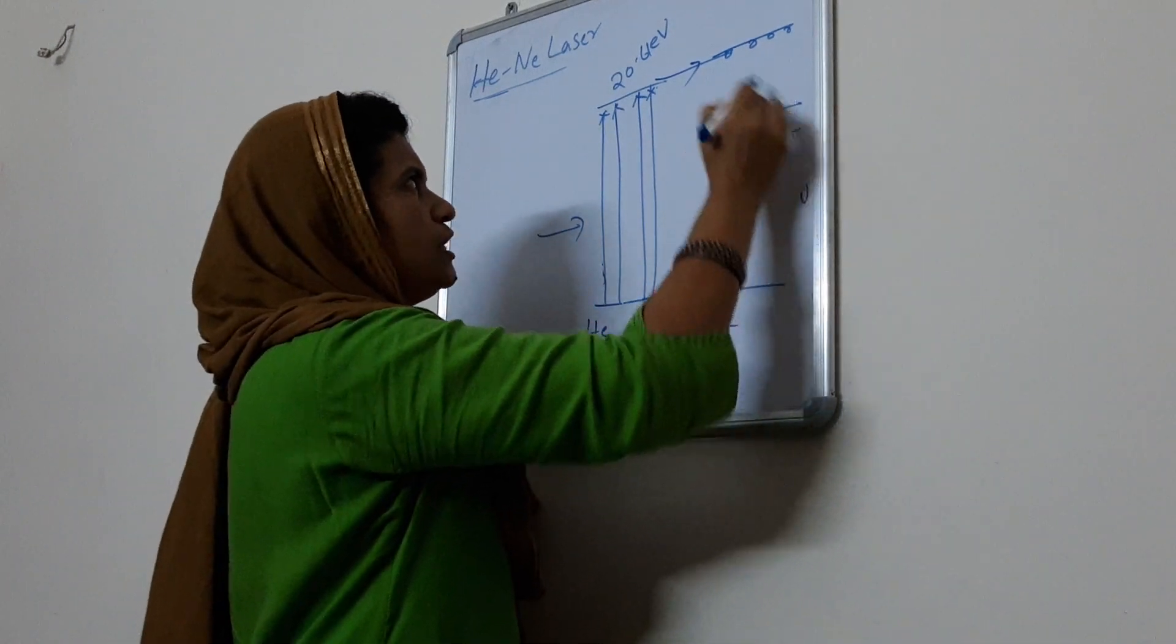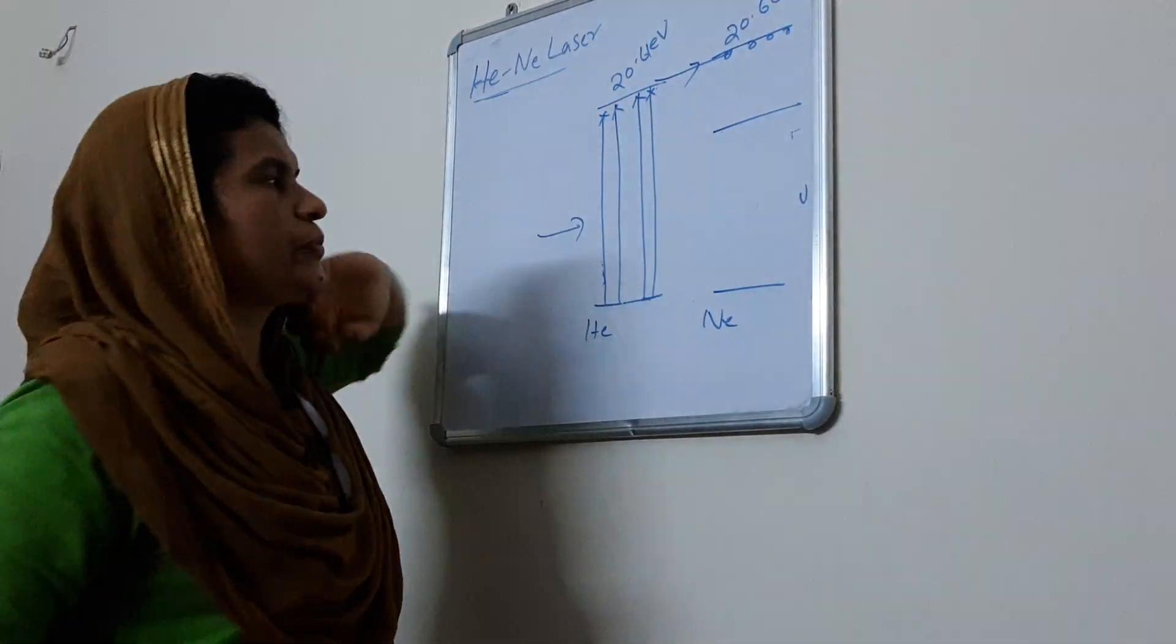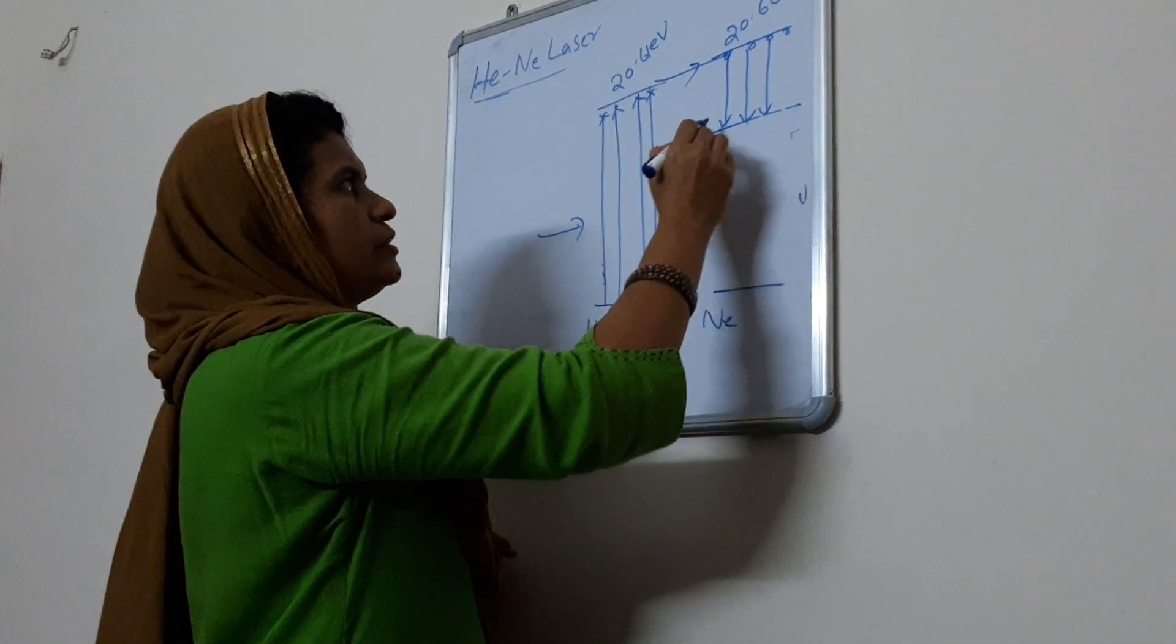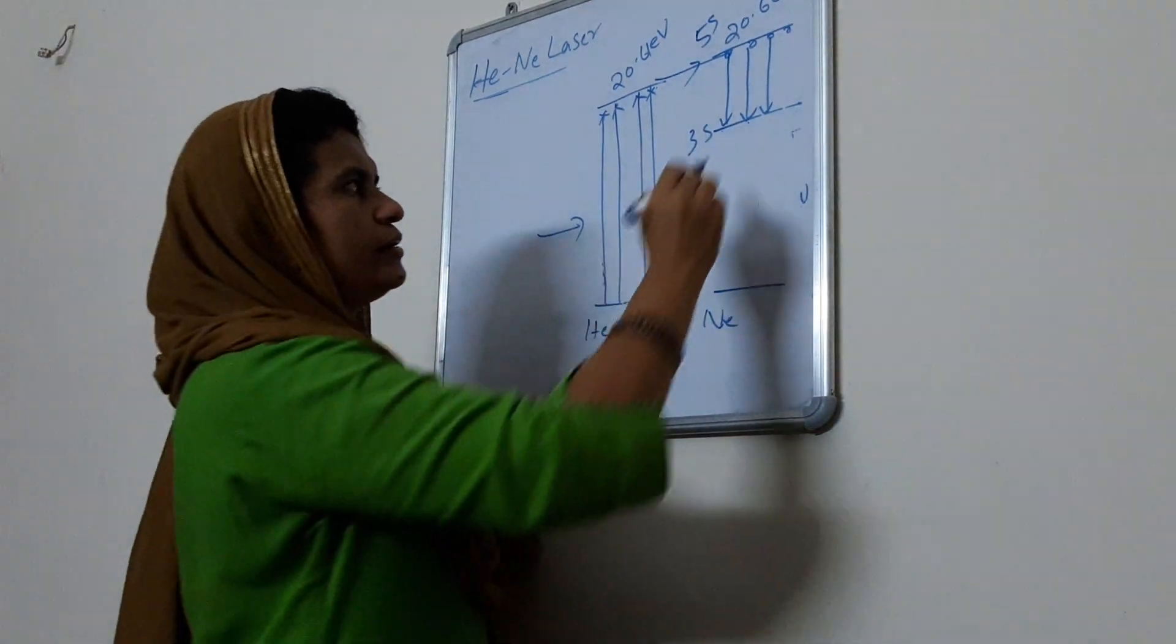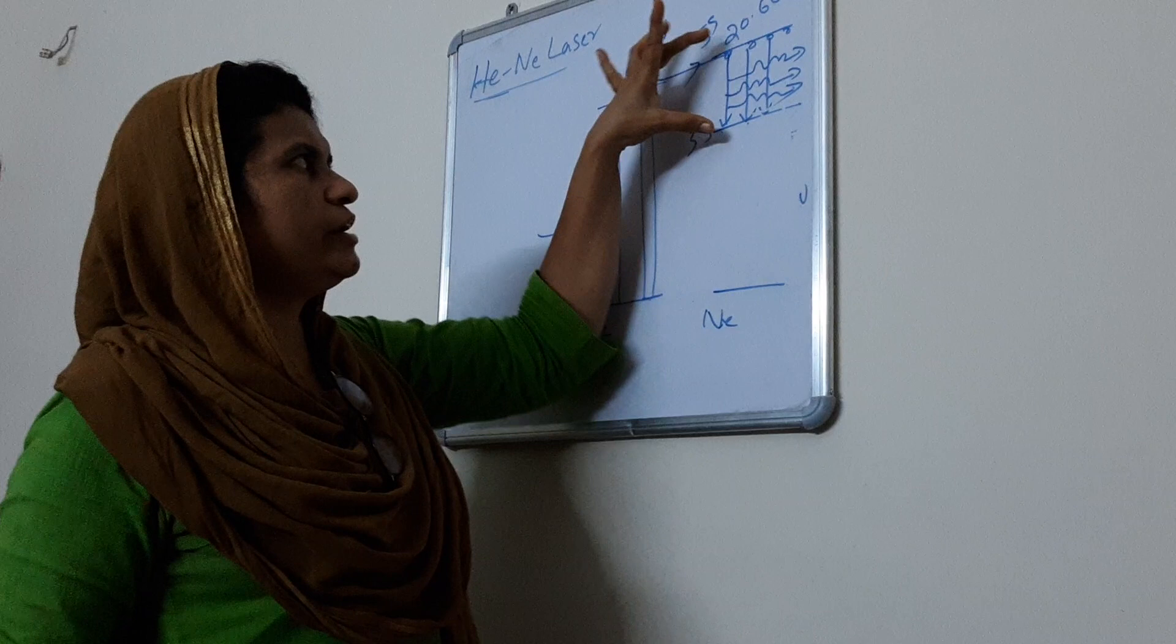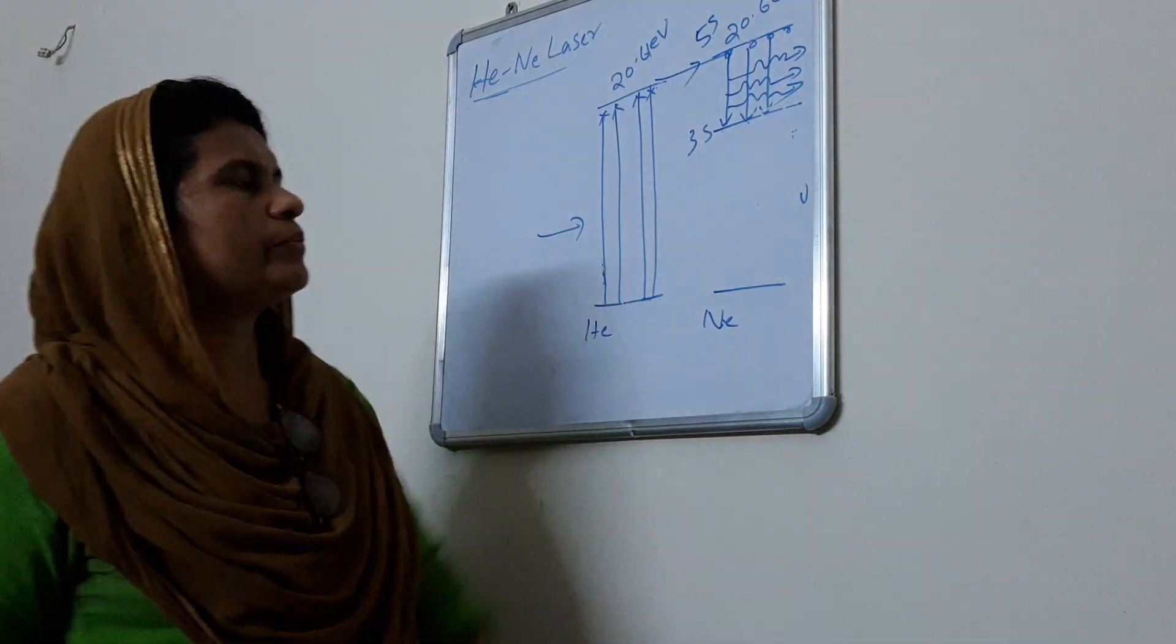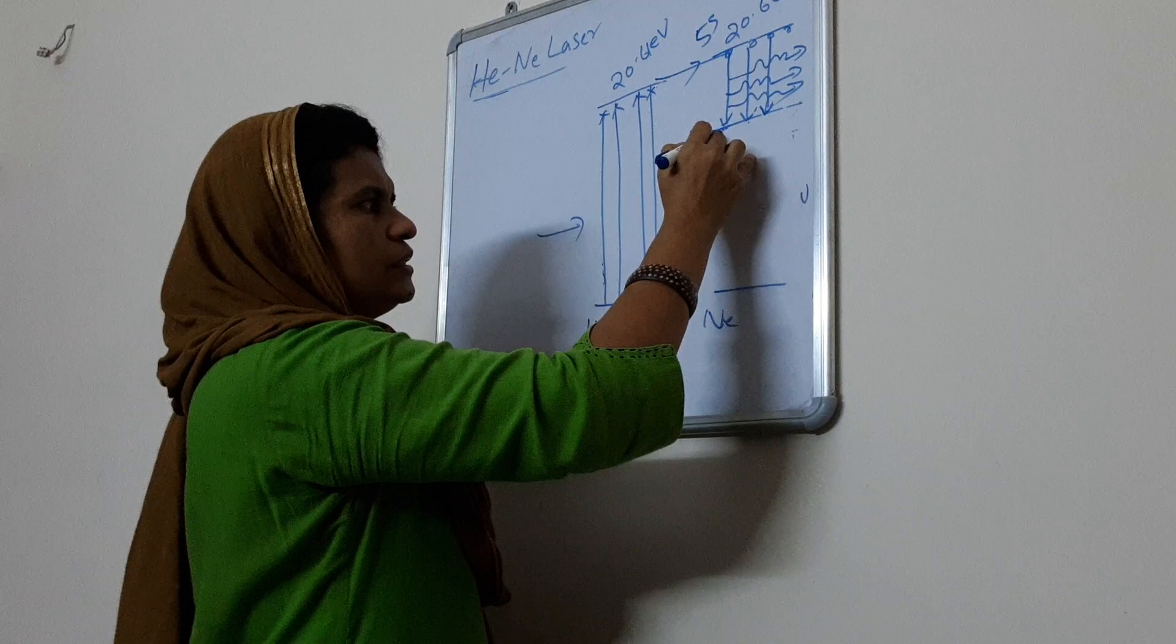Then it automatically, this is the 5th level and this is the 3rd level of neon. 3rd level of neon, liberating laser. This is the spontaneous emission and laser beam side. This is the metastable state and laser beam is emitted out and it comes to another stage.